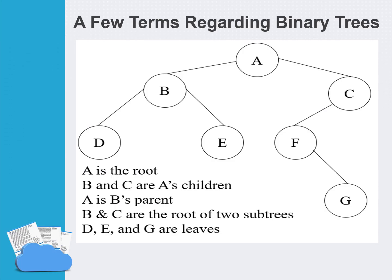This is a diagram representation of a binary tree. As we can see, A is the root node at the topmost level. B and C are A's children, and A is B and C's parent. B and C are the roots of two subtrees. D, E, and G are leaf nodes because they don't have any children.